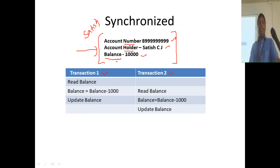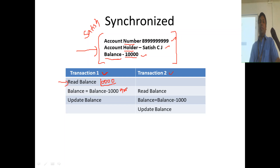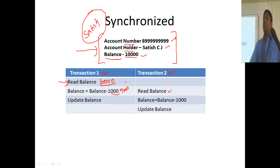Say thread 1, or transaction 1, starts first. It reads the balance — what is the balance? Transaction 1 will get 10,000 as the balance. Next it tries to do: balance = balance - 1,000. There are two steps: first it subtracts 1,000 from 10,000, so the balance becomes 9,000. While it is performing these activities, thread 2, which runs in parallel, is also reading the balance for the same object. So what balance does it read? It reads 10,000.